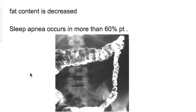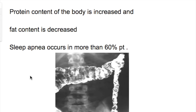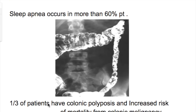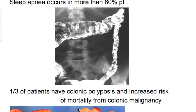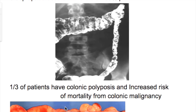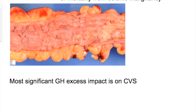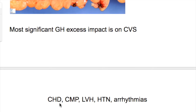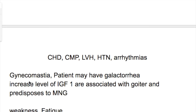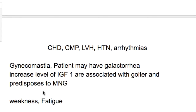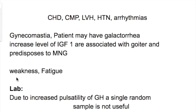What are the effects on the respiratory, gastrointestinal, and cardiovascular systems? In the respiratory system, sleep apnea occurs in more than 60 percent of patients. In the gastrointestinal system, one-third of patients have colonic polyposis and an increased risk of mortality from colonic malignancy. The most significant effect of GH excess is on the cardiovascular system: chronic heart disease, cardiomyopathy, left ventricular hypertrophy, hypertension, and arrhythmias. The patient may also develop gynecomastia and galactorrhea. There is an increased level of IGF-1 associated with goiter, producing multinodular goiter. The patient feels weak and fatigued.